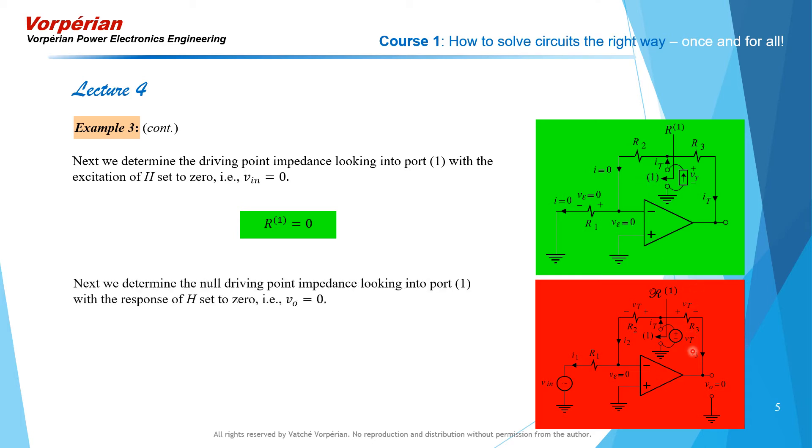In the second case, we have Vt connected here while the input voltage is live. This is the excitation of our transfer function, and the two together are nulling the response of the transfer function. And when we do that, the output is nulled, the differential input voltage of the op-amp is nulled.